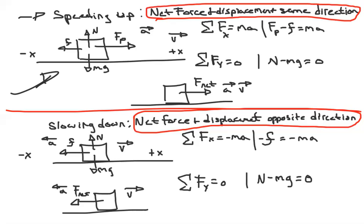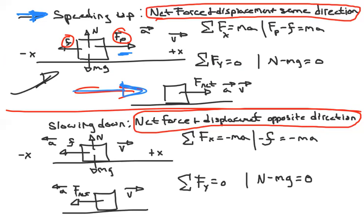When we combine these two vectors — the push and friction — into one net vector, we know there's going to be some push left over. The only force in the direction we're moving is the push, so that must be the net force. You can already tell what it is from the science, not by calculating anything.